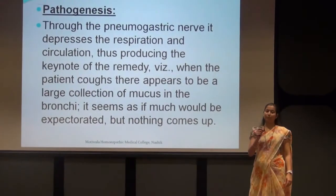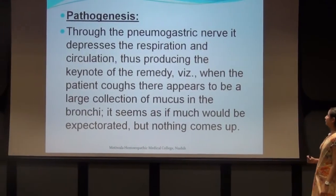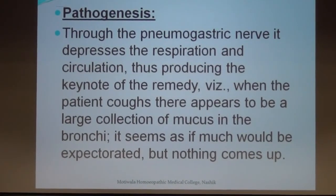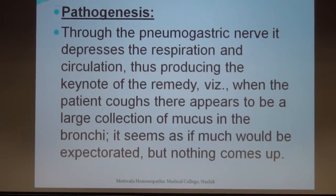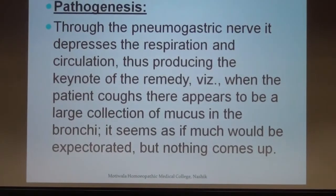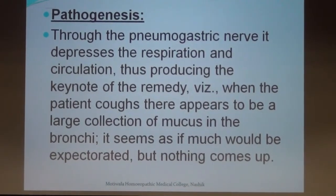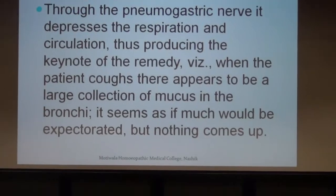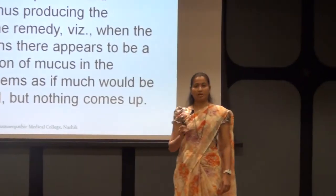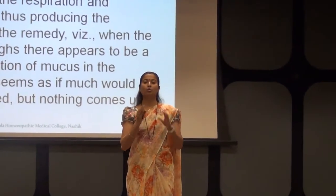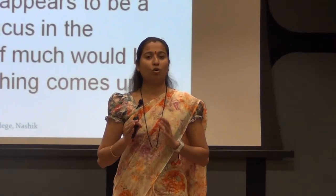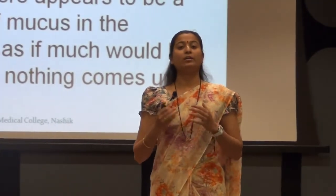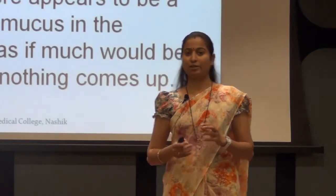The main key feature of this remedy's pathogenesis is the pneumogastric nerve. Through the pneumogastric nerve, it depresses respiration and circulation, producing the keynote of the remedy: when the patient coughs, there appears to be a large collection of mucus in the bronchi — it seems as if much would be expectorated but nothing comes out. As the pneumogastric nerve supplies both the respiratory and GI organs, on GI organs it produces vomiting and diarrhea, and on respiratory organs it produces catarrhal inflammation.